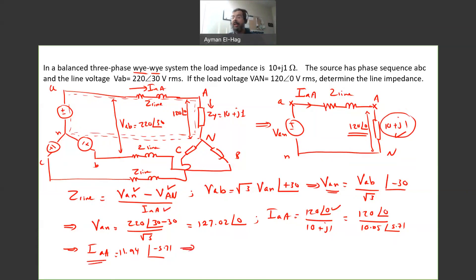Because now I know IAA, I know everything, you will find that your Z line now, substitute VAN, we already found it, which is equal to 127.02, angle of 0, minus VAN capital, which is given to us 120, angle of 0, divided by the current 11.94, angle of minus 5.71.